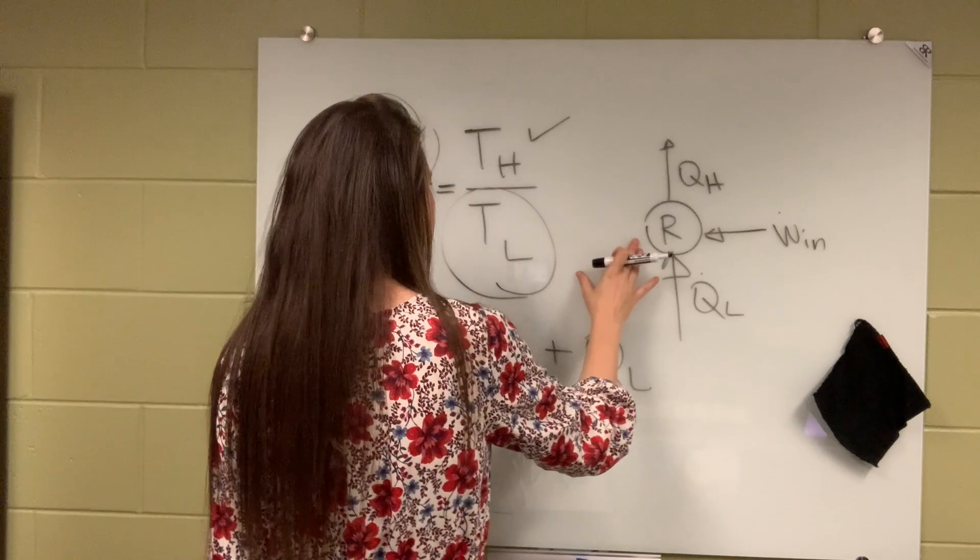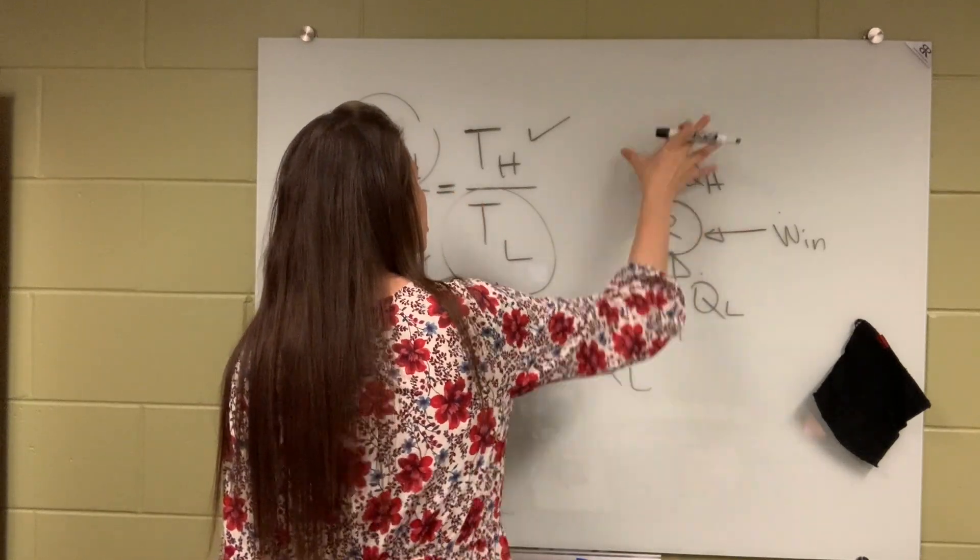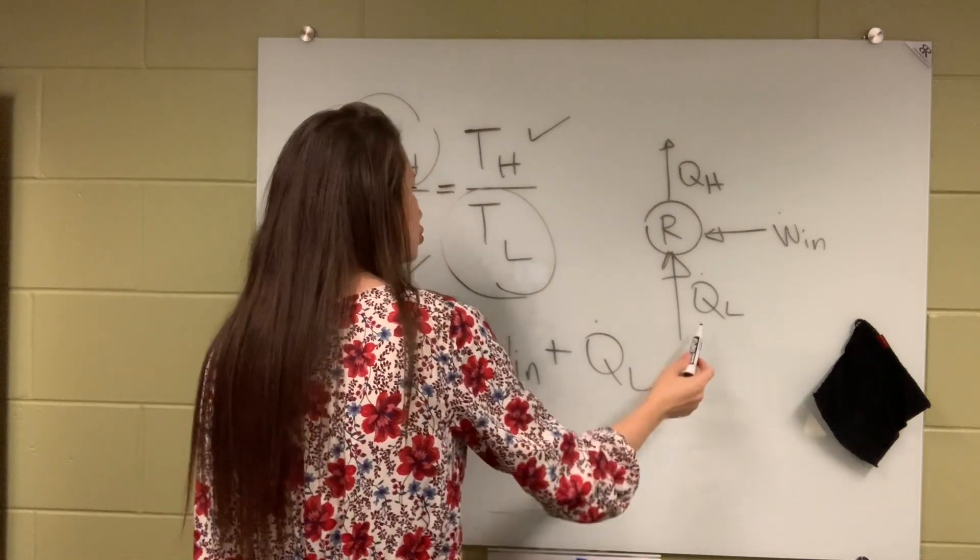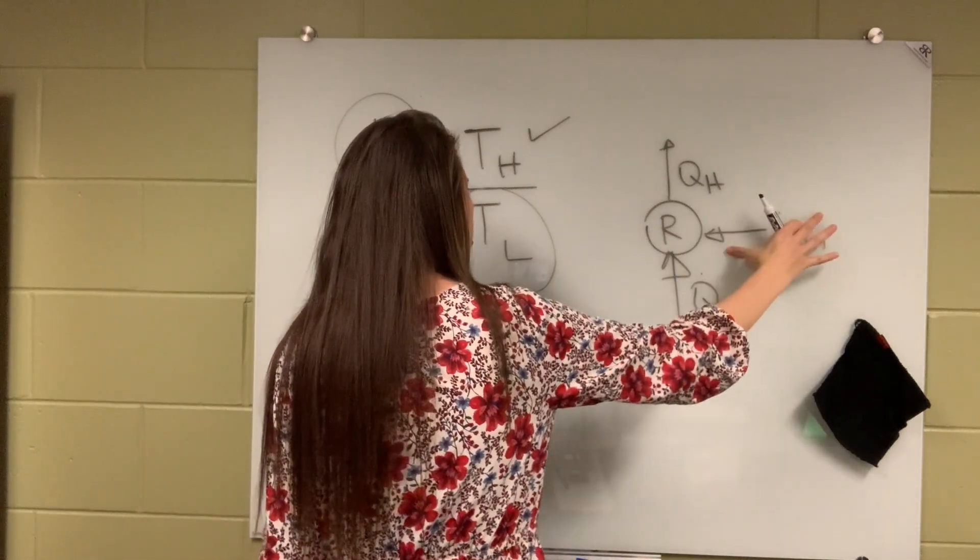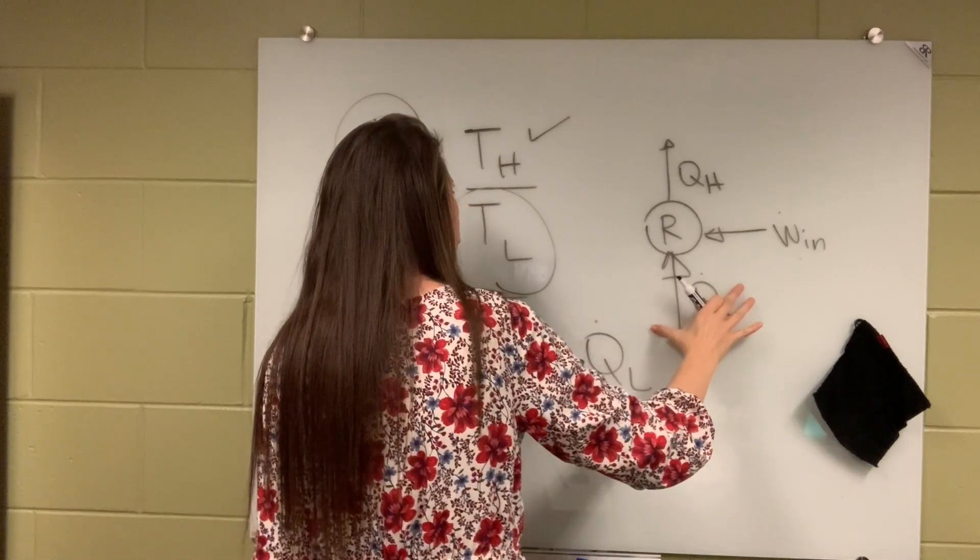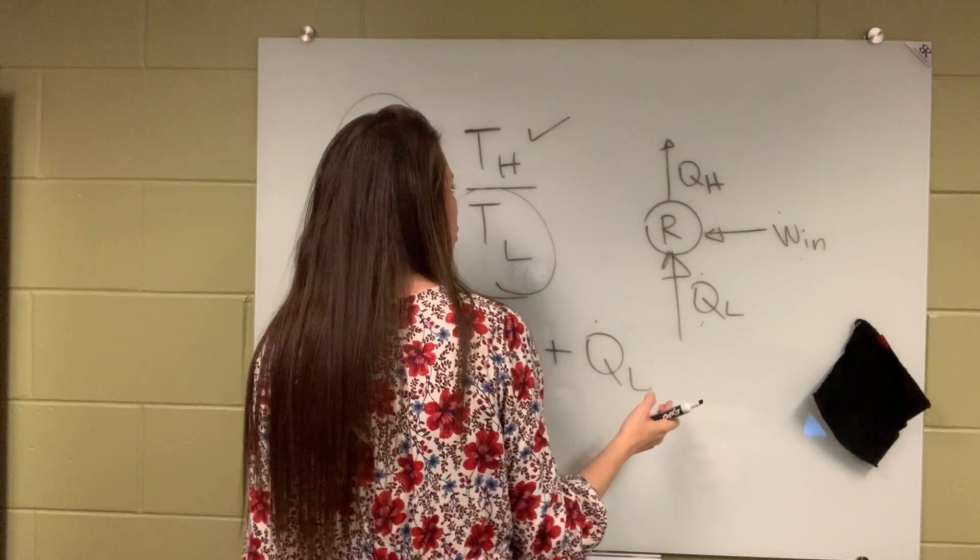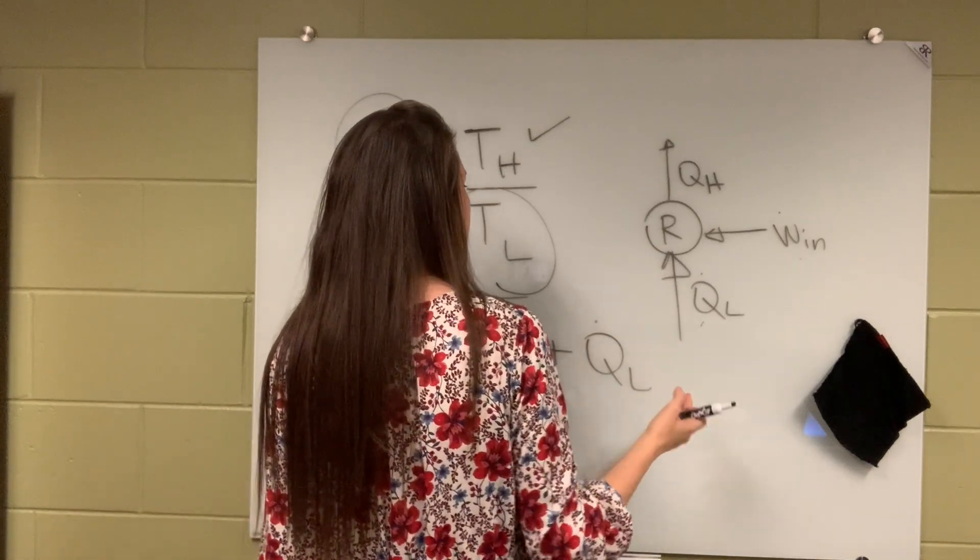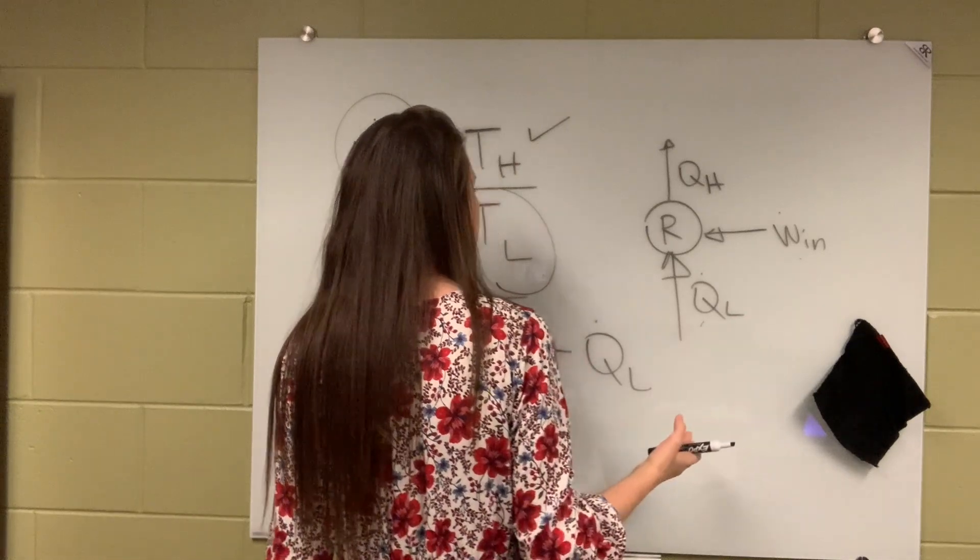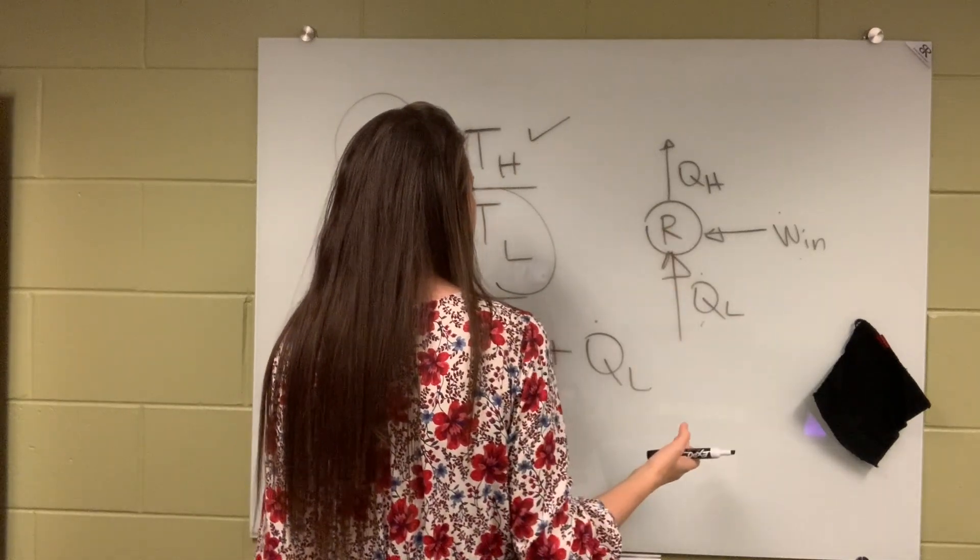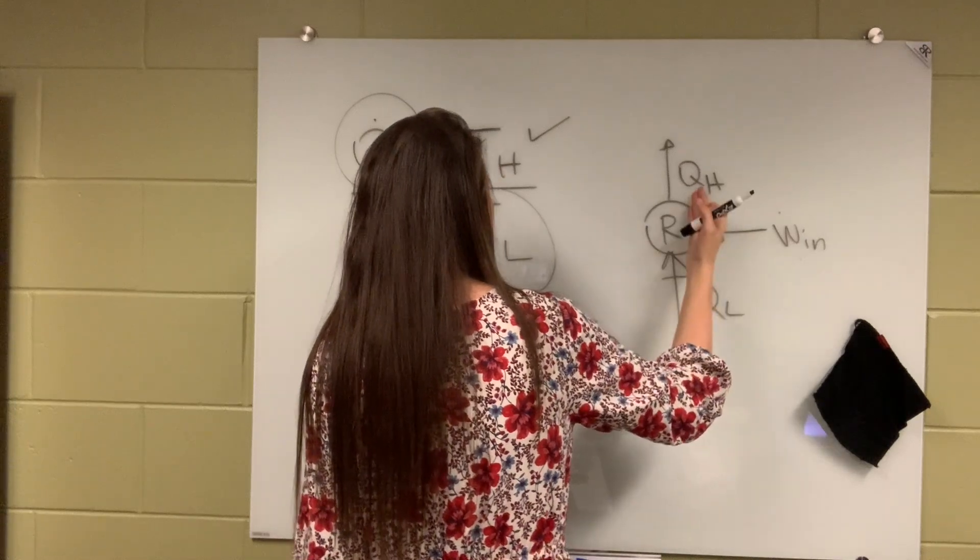Whatever gets in has to get out. So that means QL getting in plus W getting in, so work input plus the heat input, has to be equal to whatever getting out because we know it from the energy balance, right? Energy balance says whatever energy is getting in has to be equal to the energy getting out. Therefore, this plus that has to be equal to that.